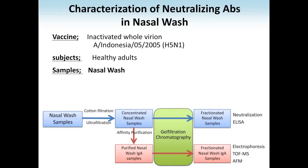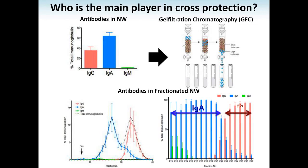Next, we further characterized the neutralizing antibodies in nasal wash. After intranasal vaccination with the H5N1 vaccine, nasal wash samples were collected, concentrated, and used for characterization. The question is: who is the main player in cross-protection in the nasal wash? We measured the amount of antibodies in the nasal wash. The upper left column shows that 70% of antibody in nasal wash is IgA and approximately 30% is IgG.